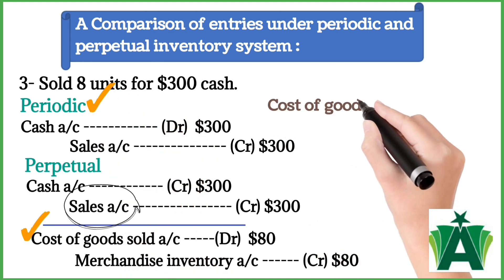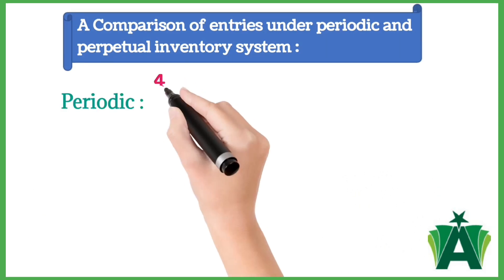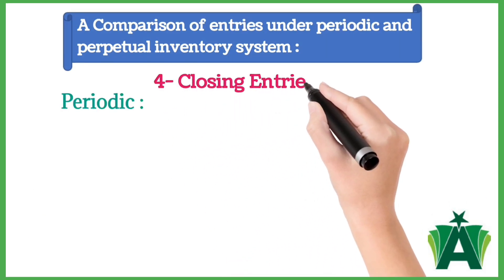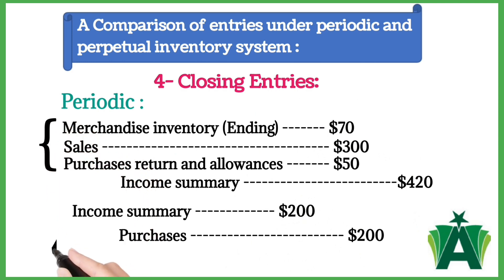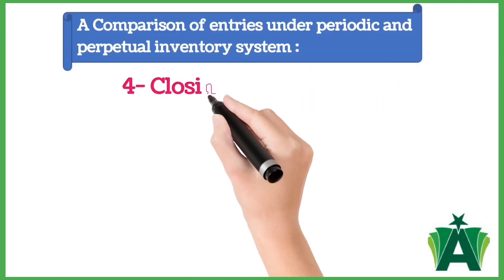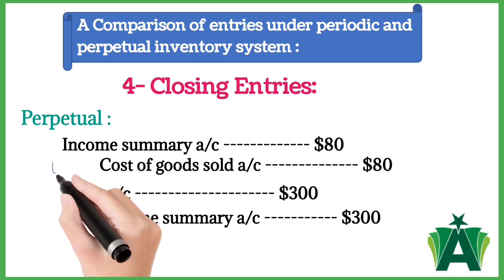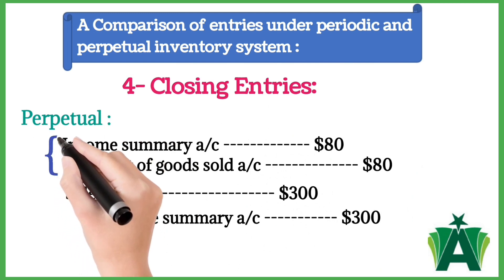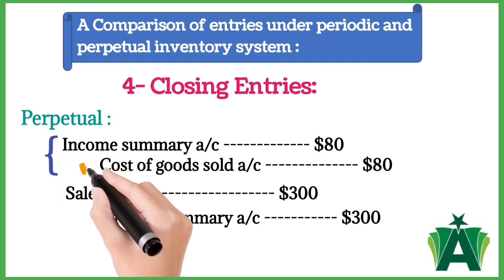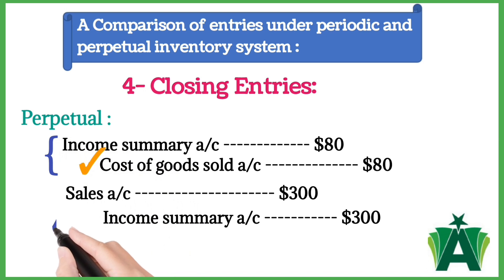Transaction 4: closing entries. Under the periodic system, all of the cost elements related to inventories are transferred to Income Summary. Under the perpetual inventory system, those cost elements were already recorded in a Cost of Goods Sold account. Thus the closing entries simply transfer the balance in the Cost of Goods Sold account to the Income Summary account.